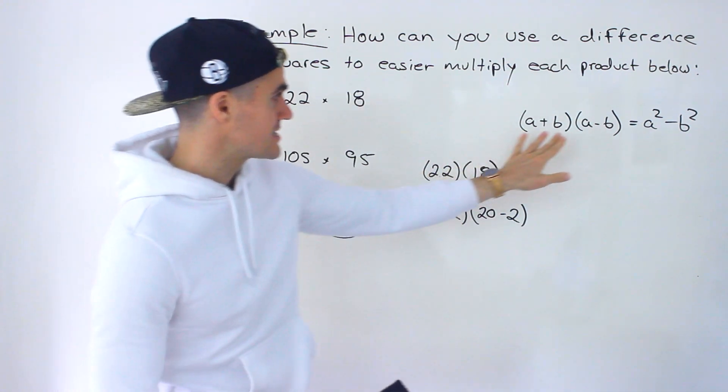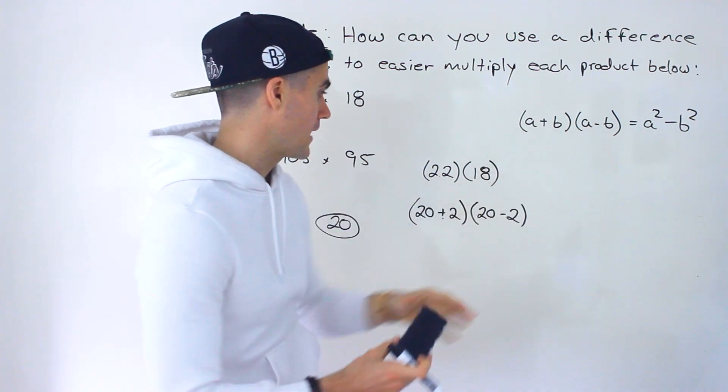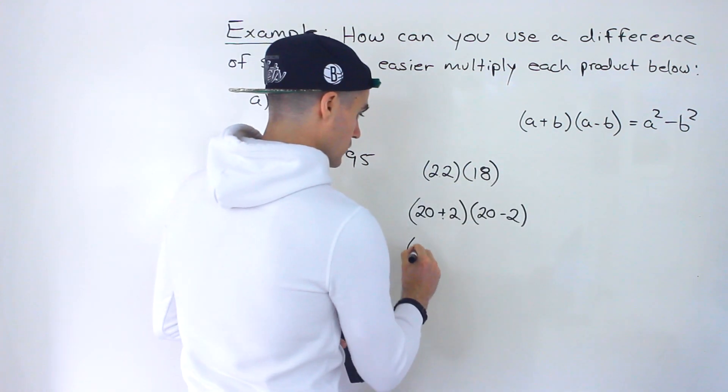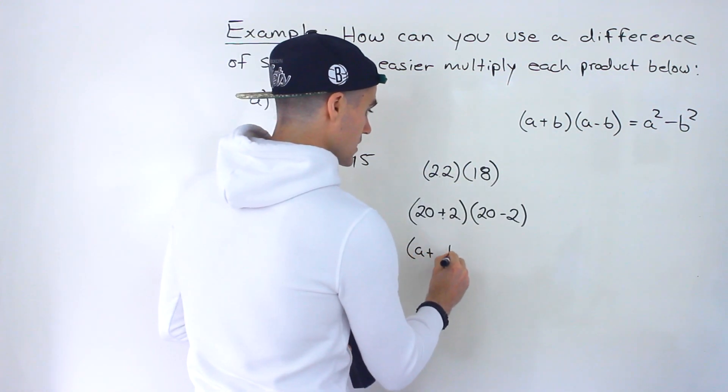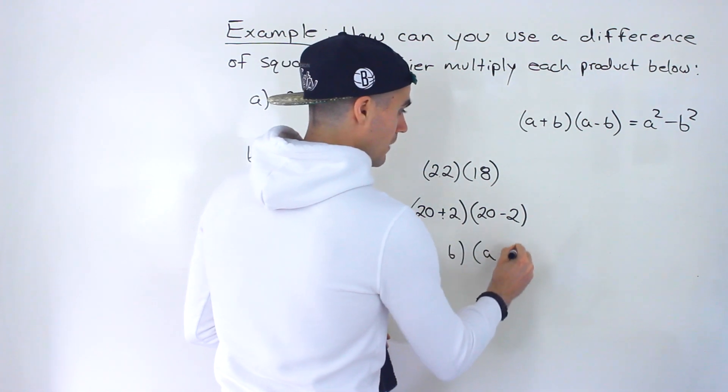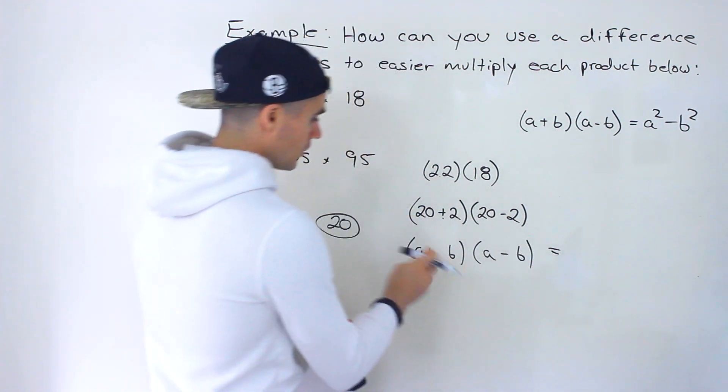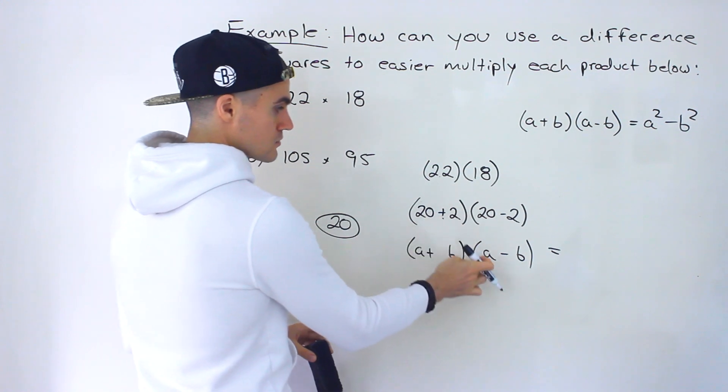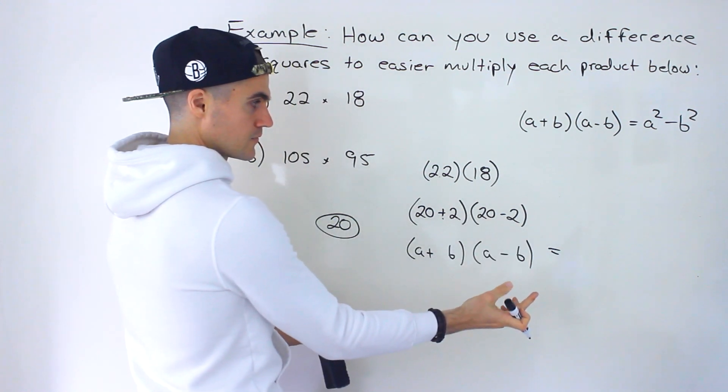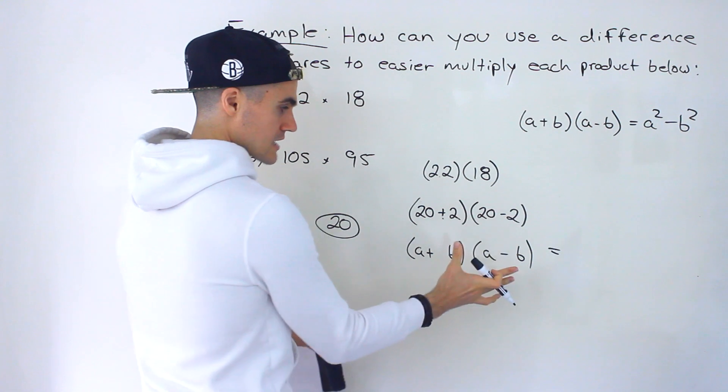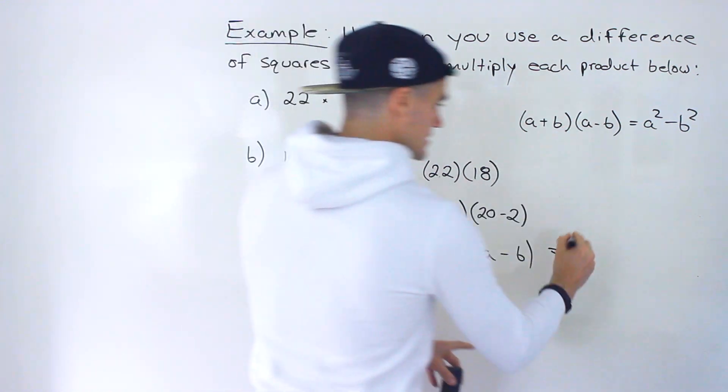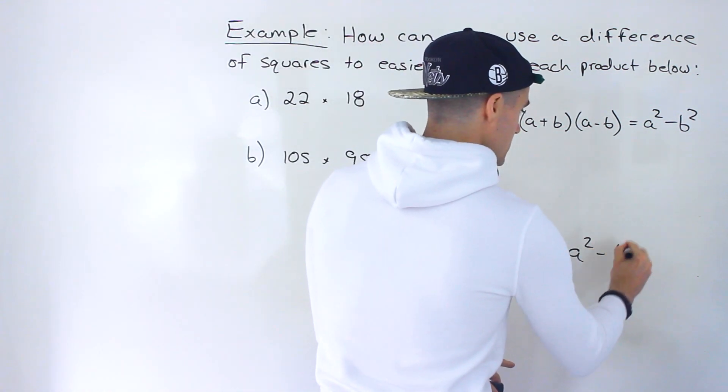And then when we get it to this notice it's in that format. It's like let's write the formula below, it's like a plus b, a minus b. Where the a is 20, the b is 2, the a is 20, the b is 2. This and this are the exact same thing and we know this simplifies to a squared minus b squared.